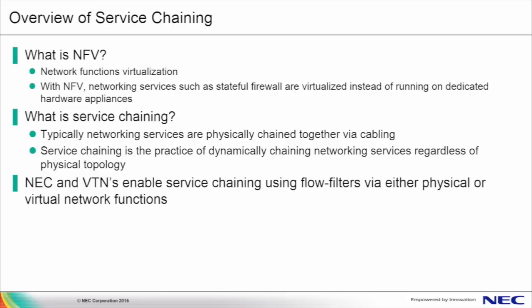While NFV is a very powerful concept on its own, it further benefits from service chaining. Service chaining enables the dynamic chaining of either virtual or even physical network functions into the path of traffic. Traditionally, when trying to introduce a physical network function, it would require substantial planning and configuration as well as potential downtime. Also, as new services are turned up over the infrastructure, network configurations would need to be deployed on a box-by-box basis, which can be a slow and error-prone process. Service chaining enables better IT agility by allowing users to dynamically introduce new virtual or physical network functions into the path of traffic via a centralized location, regardless of any underlying physical topology. With NEC and programmable flow, we can deploy service chaining using service insertion in a virtual tenant network, or VTN, using flow filters to redirect traffic as needed to the proper virtual or even physical network function.